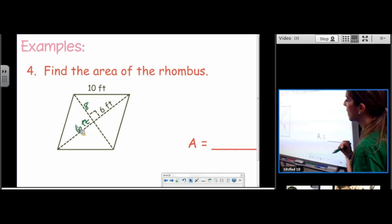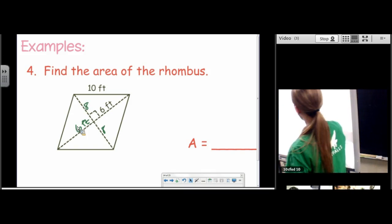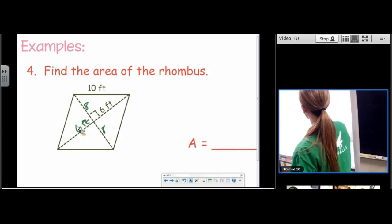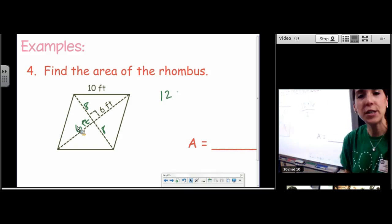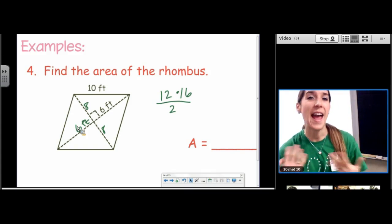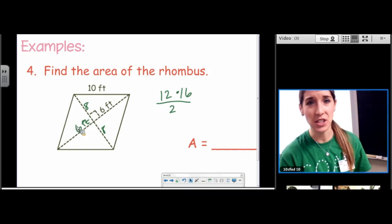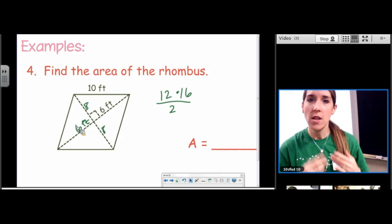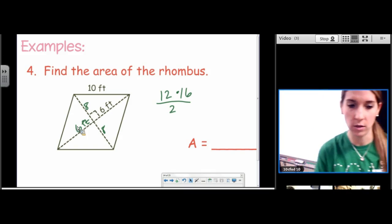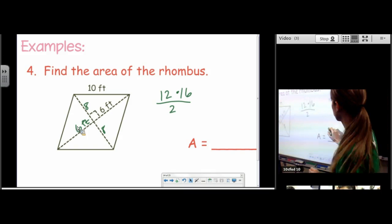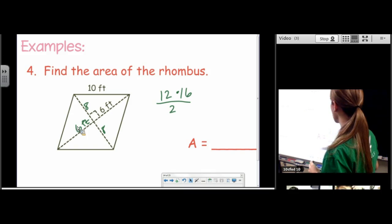So now we're ready to find the area. 12 times 16 divided by 2. For some reason, people want to try to add the diagonals and divide by 2. Make sure you know the formula is diagonal 1 times diagonal 2 divided by 2. 96 square feet.